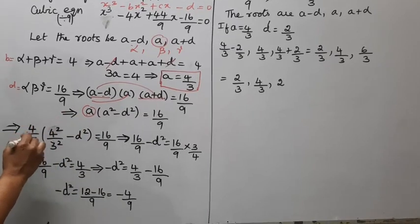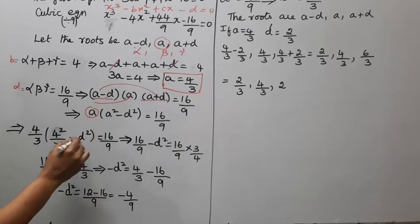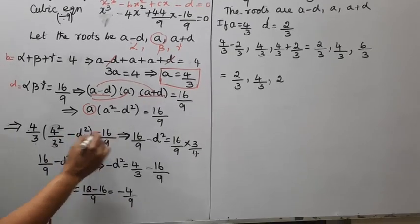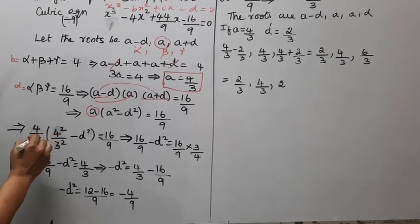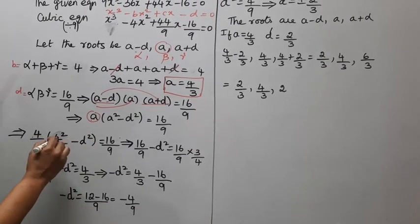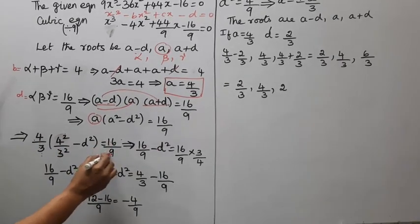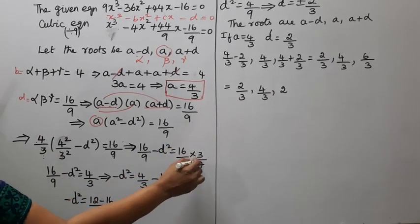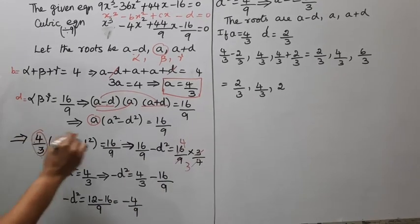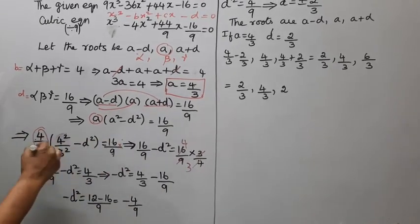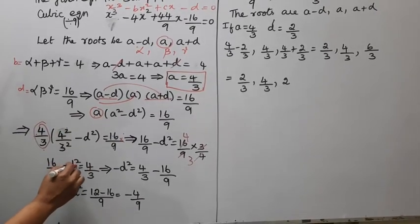Substituting a equals 4 by 3: (4 by 3) times (16 by 9 minus d²) equal to 16 by 9. Multiplying both sides by the reciprocal, 16 by 9 minus d² equal to 16 by 9 times 3 by 4.